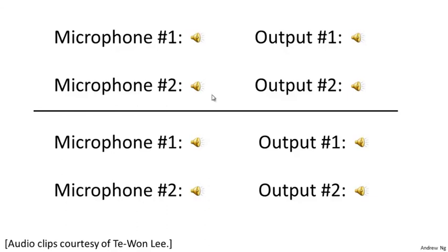You can take these two microphone recordings and give them to an unsupervised learning algorithm called the cocktail party algorithm, and tell the algorithm to find structure in this data. What the algorithm does is listen to these audio recordings and recognize that it sounds like two audio sources being added together. The cocktail party algorithm then separates out these two audio sources. It managed to separate out the English voice in one recording and the other language in the second output.